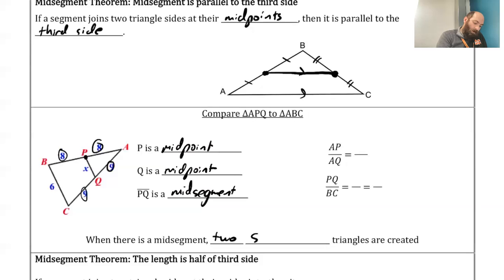So when there is a mid-segment, two similar triangles are created. And so if you look at that, you can see two triangles there. There's one of them. There's one triangle, and that's made up of APQ. And we've got 8, 9, and X. The other triangle that we get is the big one, and that's made up of ABC.